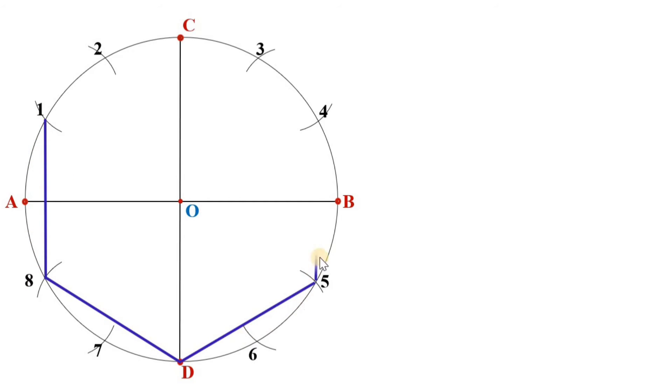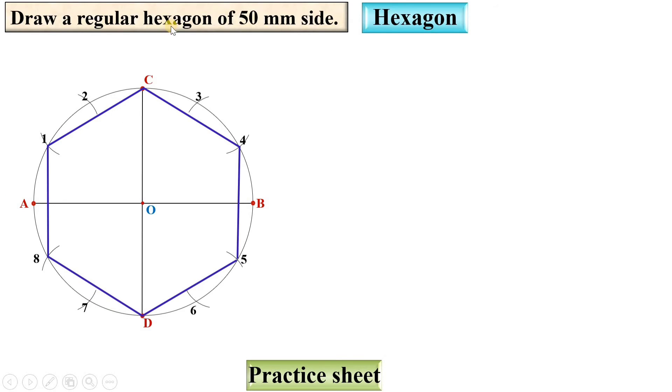Now join this point. You will get the hexagon. Here, this is your output. This hexagon only should be dark. The remaining work should be as light as possible.